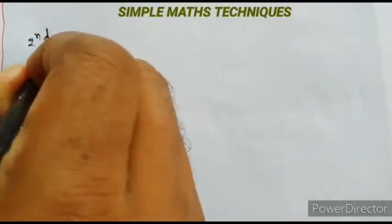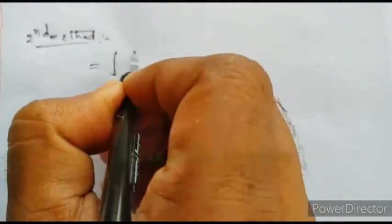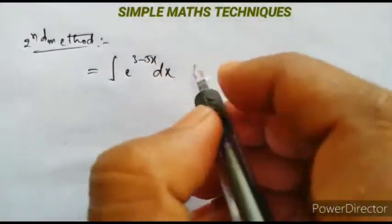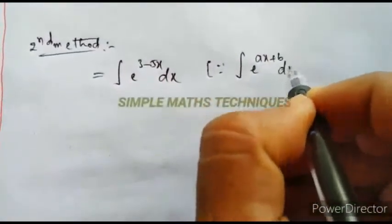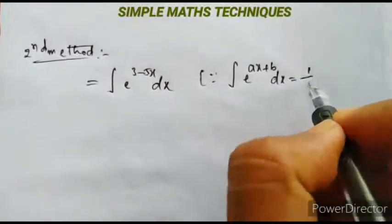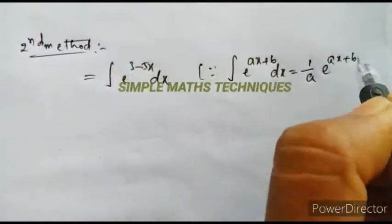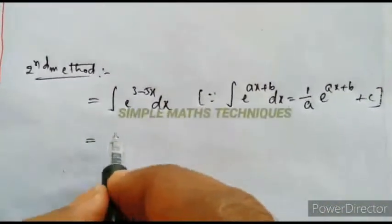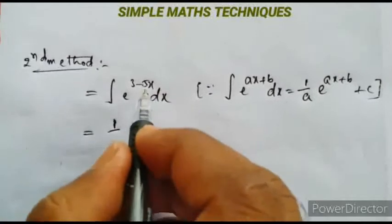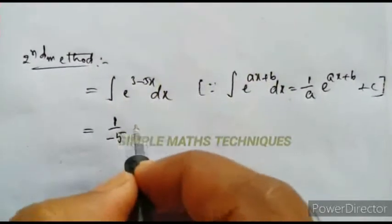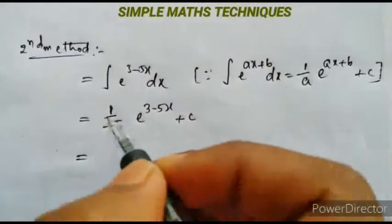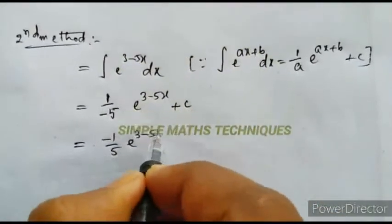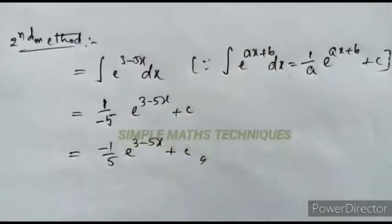Second method: given integration of e^(3-5x) dx, using the formula — integration of e^(ax+b) dx = 1/a · e^(ax+b) plus c. Here the coefficient of x is -5, so a = -5. Therefore 1/(-5) · e^(3-5x) plus c, which equals -1/5 · e^(3-5x) plus c. This is the solution.